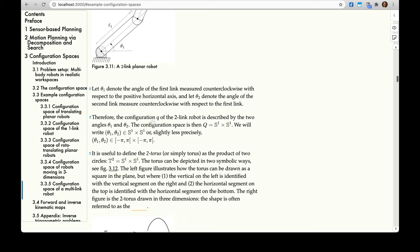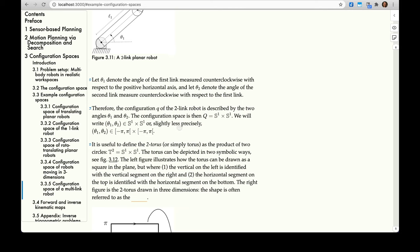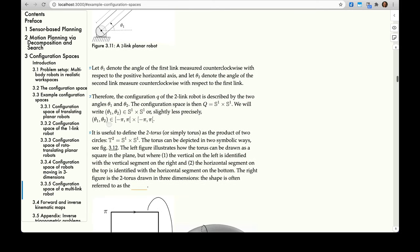Therefore, the configuration Q of the two-link robot is described by the two angles theta_1 and theta_2. The configuration space is then the Cartesian product of one of the unit spheres and another of the unit spheres. We will write (theta_1, theta_2) to be equal to S^1 × S^1, or the Cartesian product of S^1 and S^1, or slightly less precisely theta_1, theta_2 in [-π, π) × [-π, π), the Cartesian product of those two intervals.